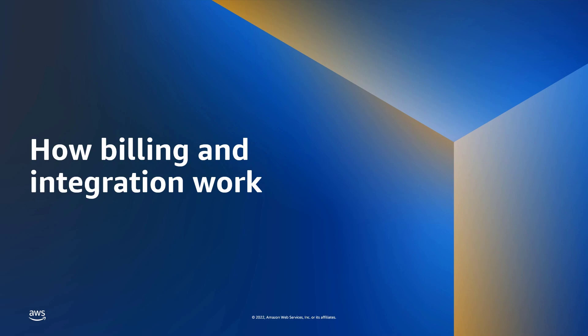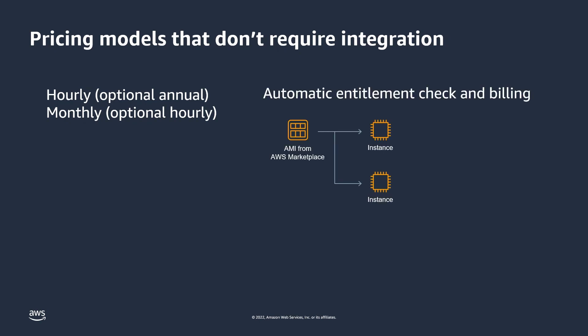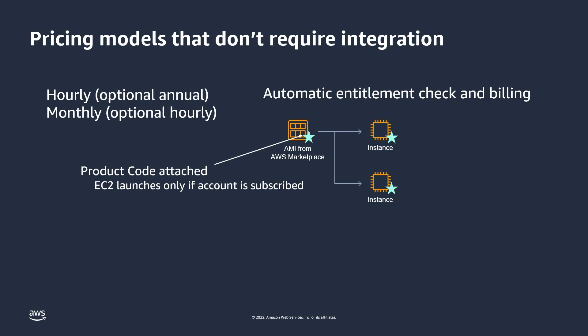The hourly and monthly pricing models don't require integration. Instead, when you submit your AMI to AWS Marketplace, a product code is attached that is used for automatic entitlement checks and billing. The code tells EC2 to check with AWS Marketplace to see if an account is subscribed before allowing the launch. If it is, Marketplace authorizes the launch and tracks the hours used by the EC2 instances. Note that if a buyer creates a copy of the AMI, instances launched from that derivative AMI will also be tracked by Marketplace using the product code.